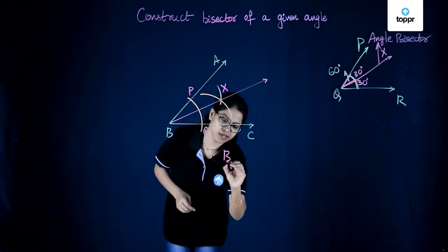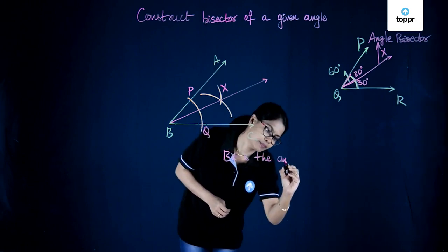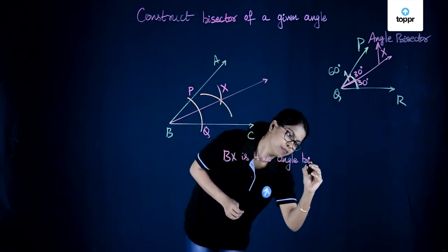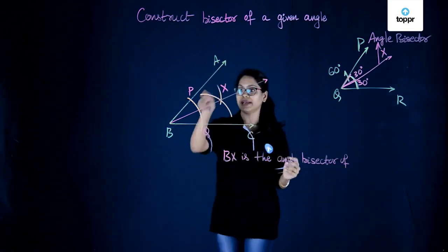Thus BX is the angle bisector of angle ABC.